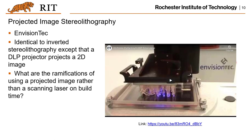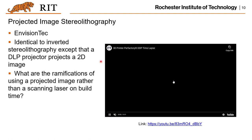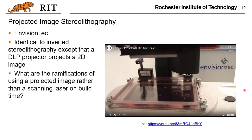Besides the vector scan-based method, there is projected image-based stereolithography. The representative company is EnvisionTEC. This process is similar to inverted stereolithography in that it builds the part upside down, but instead of laser scanning it uses a digital light processing projector to project a 2D image to cure each layer simultaneously.